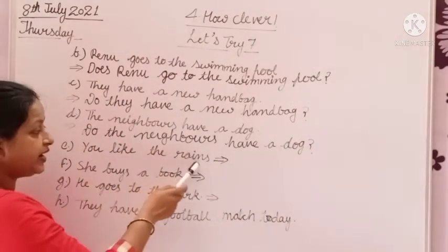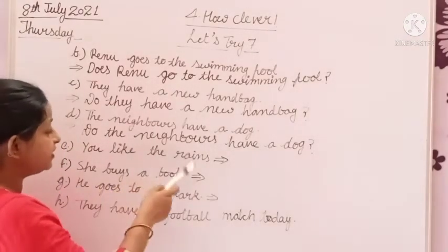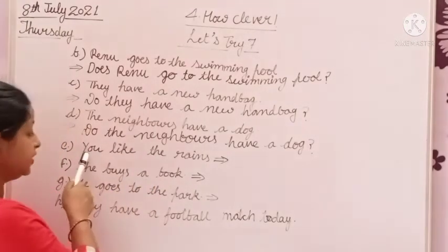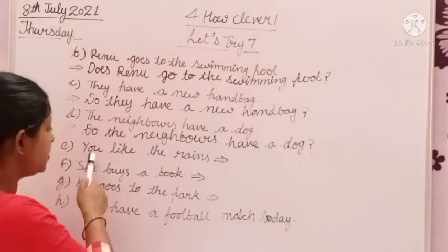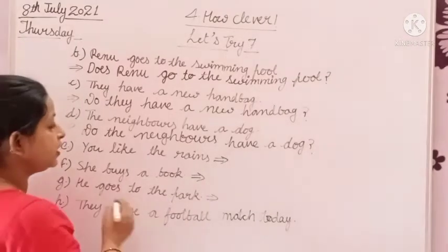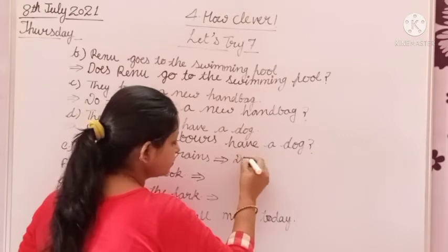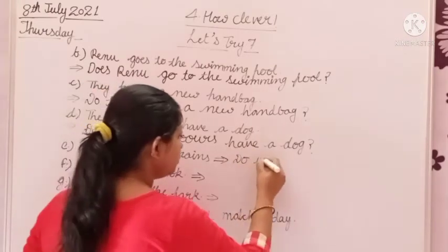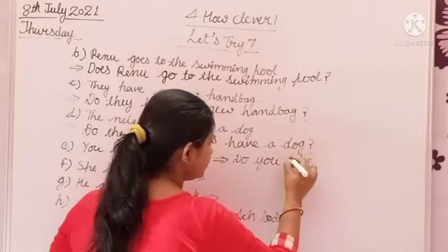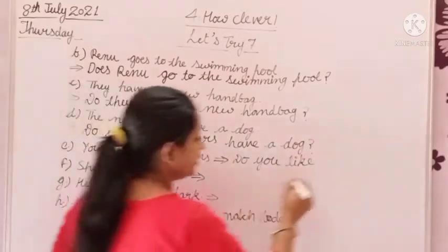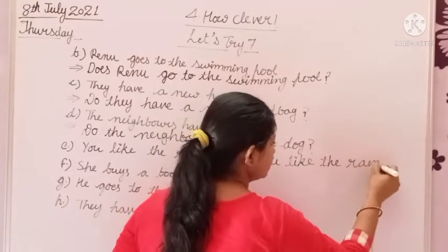You like the reins. The subject is 'you.' You is a plural pronoun. So we will put do. Do you like the reins?